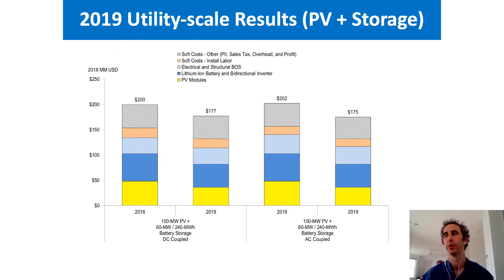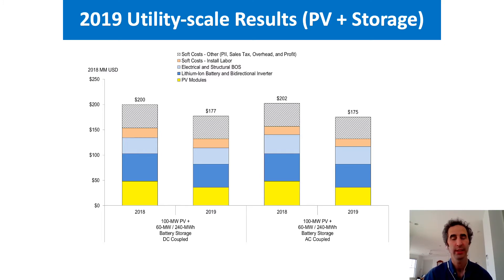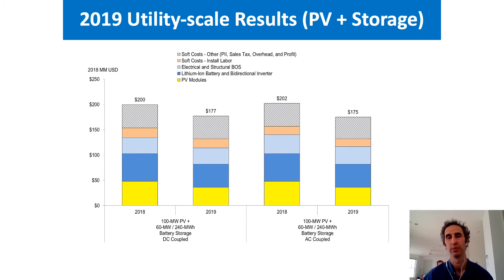In this slide, we see our 2018 and 2019 CapEx benchmarks for a 100 megawatt PV system with four hours of storage. The left side is our DC coupled design system, and the right side is our AC coupled design system, again with four hours of storage.